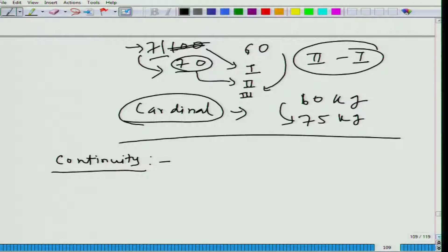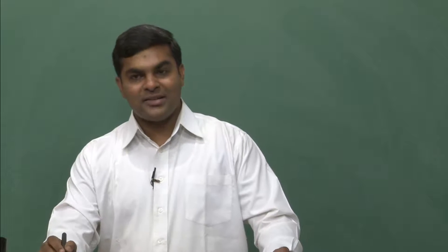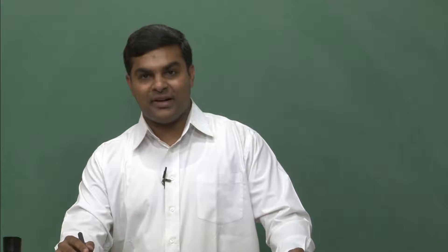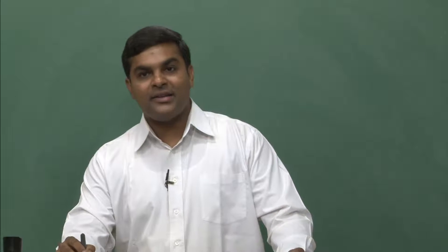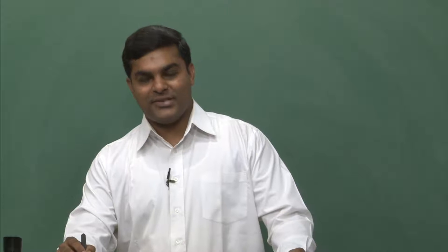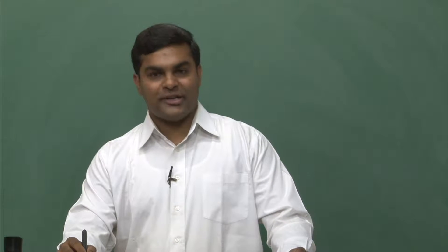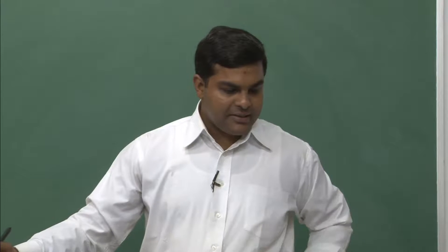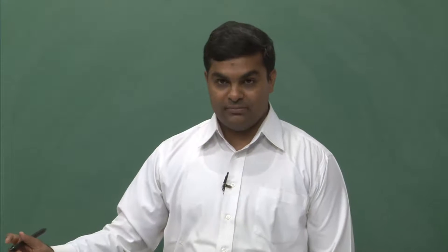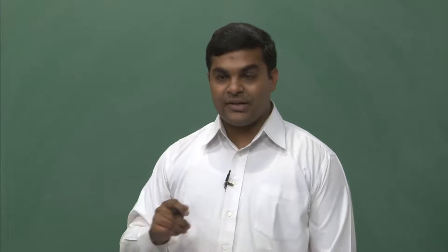In math, what we learned is that you can draw a function's graph without lifting your pen — without a break. That is a very basic definition from class 8 or 9. When you can draw a function — of course for a two-dimensional function — without lifting your pen, then the function is continuous. But here, the definition of continuity in functions and in preferences are related.